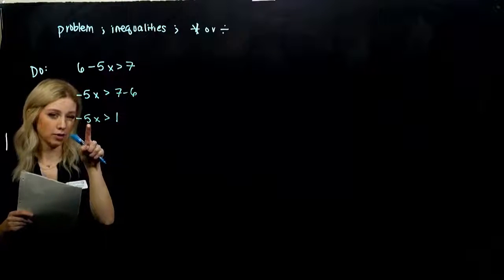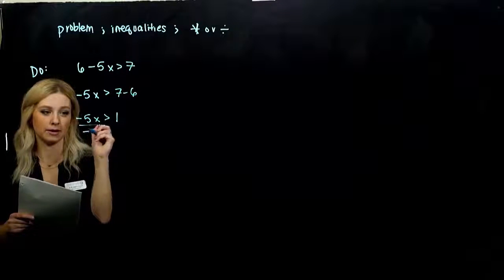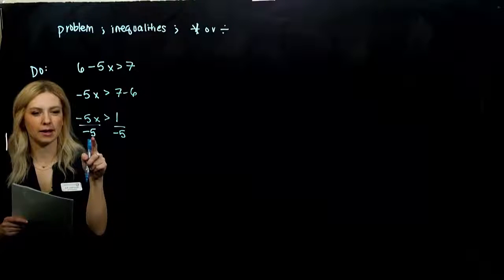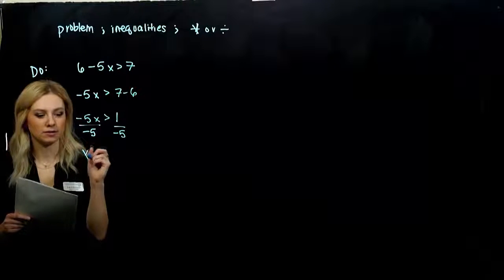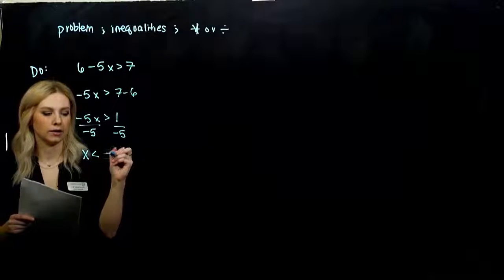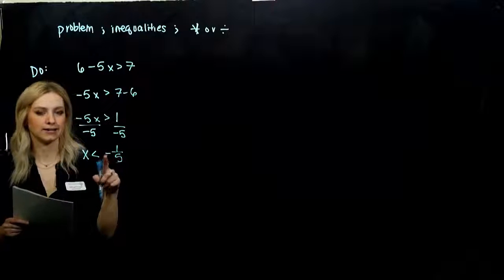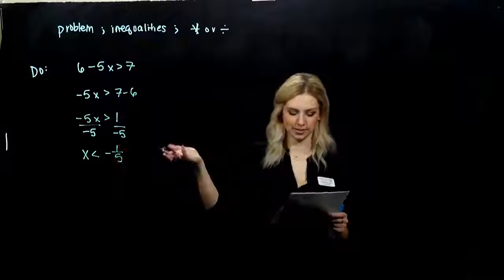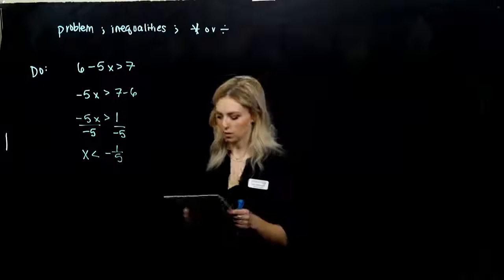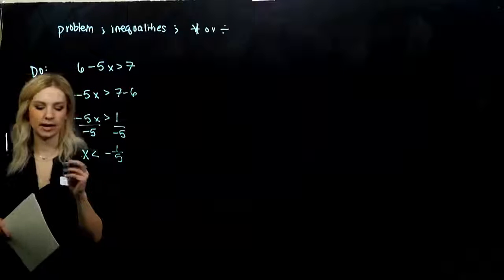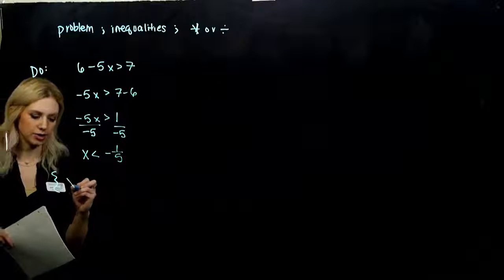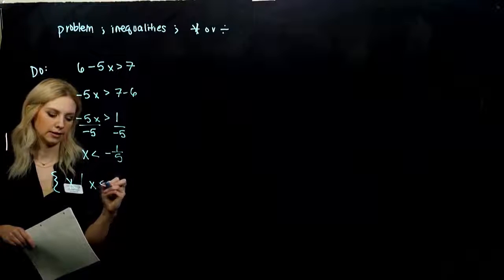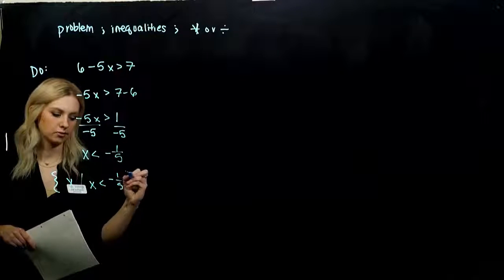I need to have that coefficient 1 on the front, so I'm going to divide by minus 5. But what do I have to remember? I'm dividing by negative, so I need to flip the inequality. With a negative, I can assign it to the outside of the number, the top or the bottom, so I'm just going to throw it on the outside. Getting used to that solution set notation — this is all the x values such that x is less than minus one fifth.